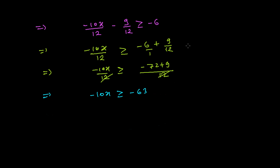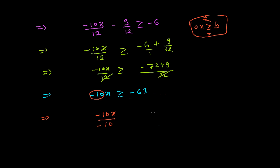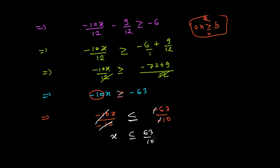Now we are in the standard stage where ax is greater than or equals to b. At this stage we divide both sides by the coefficient of the variable. So it's minus 10x divided by minus 10, and minus 63 divided by minus 10. Whenever we divide or multiply by a negative number, the inequality sign gets reversed — so greater than or equals to becomes less than or equals to.